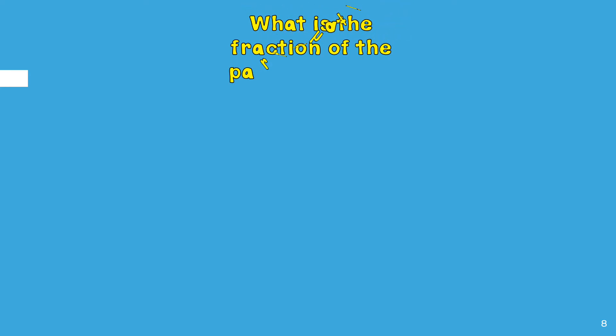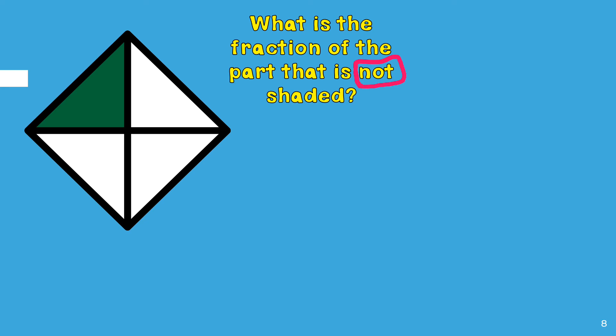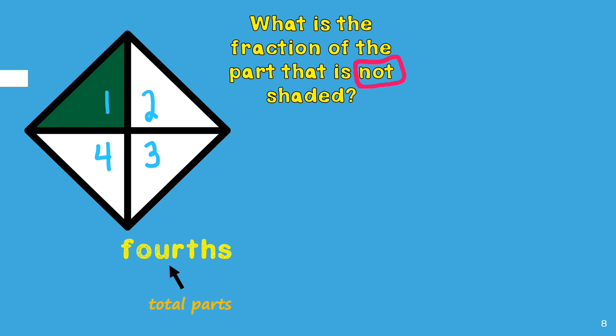What is the fraction of the part that is not shaded? This question is a little different. I'm asked to figure out the fraction of the part that is not shaded. Remember that shaded means colored, so I will need to figure out the fraction of the uncolored portion. Let's look at two examples. To figure out the fraction of the part that is not shaded in this example, I will start by counting all of the parts first: one, two, three, four. There are four parts so this shape is partitioned into fourths. This word represents the total parts in the fraction.